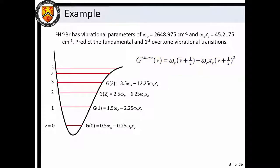To calculate the wave number of the fundamental band, we simply subtract the v equals zero level energy from that of the v equals one level.